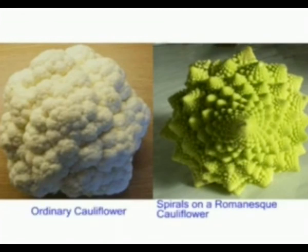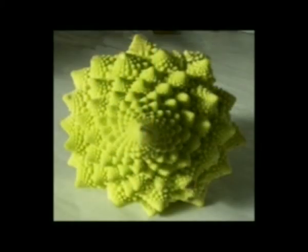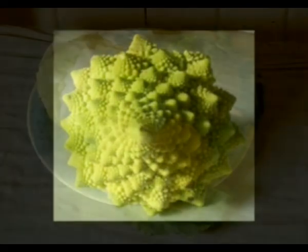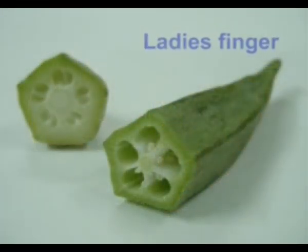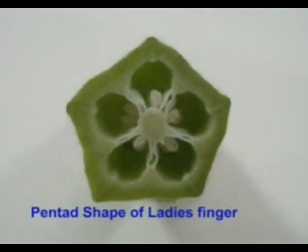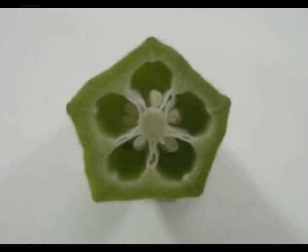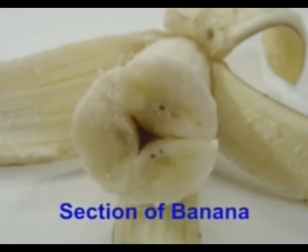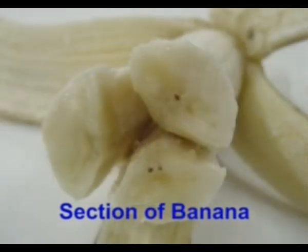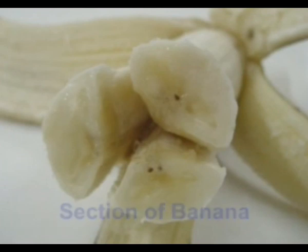Looking carefully, you can see a center point where the florets are smallest. The florets are organized in spirals around this center in both directions. Each floret is an identical but smaller version of the whole. Have you observed the shape of lady's finger? It has a five-sided pentagonal shape. So does a banana. Look at a raw banana — in cross section, it has a triad in the center: three sections.